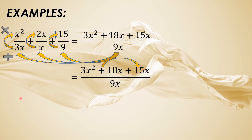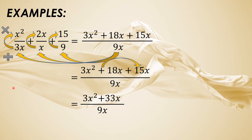Let us combine the like terms — positive 18x plus 15x. Since pareho silang may exponent na 1, let us copy the LCD which is 9x. Bring down 3x squared, and then 18 plus 15 is 33, and copy the variable x. So the resulting expression will be 3x squared plus 33x over 9x.